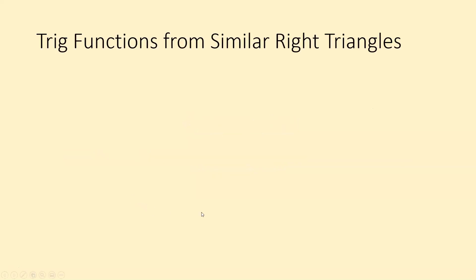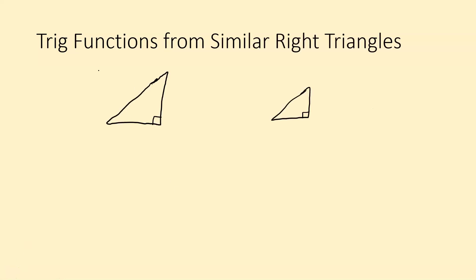First, we are going to determine where trig functions come from using similar right triangles. When we're using these trig functions, it has to be with right triangles, because they have to be similar to each other. With right triangles, we already know we have one angle similar, so we need one other angle similar. We usually use the Greek letter theta for that variable.